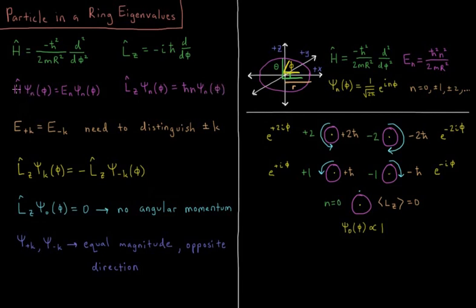So we noticed that when the Hamiltonian, e of plus k and e of minus k are equal, we need this Lz operator to help us distinguish the states of plus and minus k.